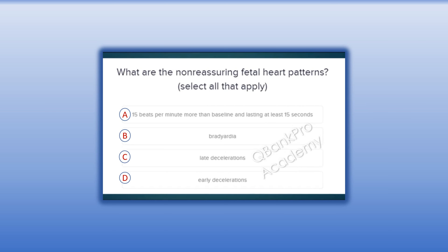What are non-reassuring fetal heart patterns? Select all that apply. A. 15 beats per minute more than baseline, lasting at least 15 seconds. B. Bradycardia. C. Late decelerations. D. Early decelerations.